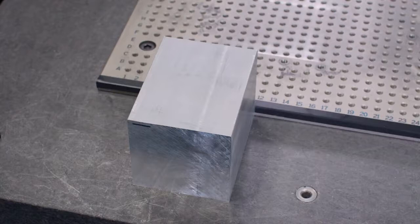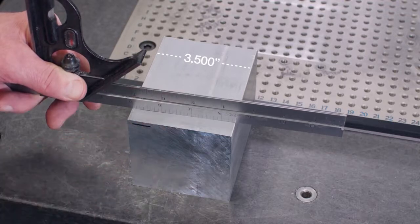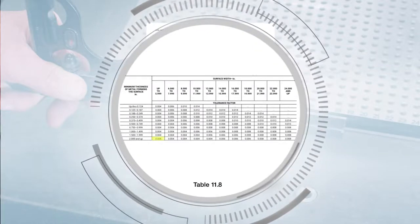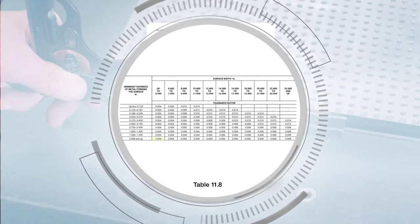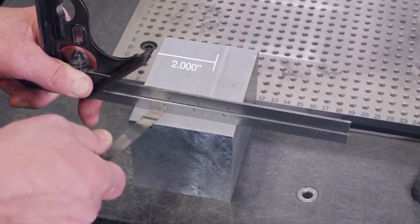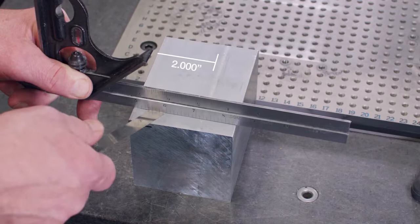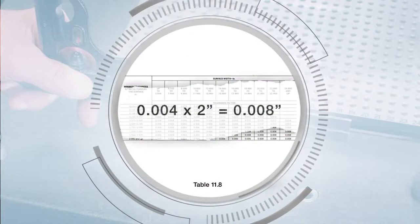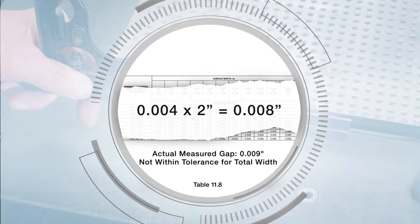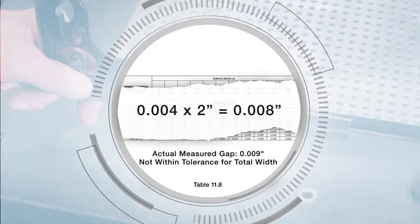Flatness tolerances also apply on a per unit basis. To illustrate this, we'll use a 3.5 inch square bar with a concave condition near one corner. Using Table 11.8, the tolerance is 4 thousandths of an inch per inch of width. Lay the straight edge across the 3.5 inch width — there is a gap towards one corner measuring 0.009 inches. Using a 2 inch span as the unit basis where the flatness condition is concentrated, the allowable tolerance is 8 thousandths of an inch (4 thousandths per inch × 2 inch span). The 9 thousandths of an inch gap is therefore out of tolerance over the 2 inch span.